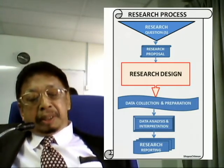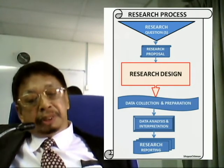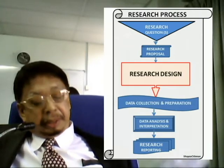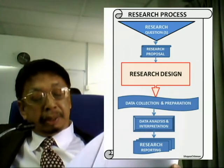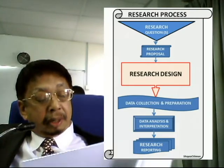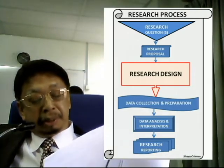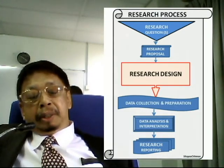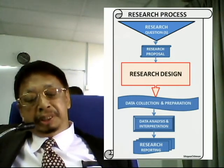Then you have to design your research, and this design of research involves many stages such as methods of data collection. This involves sampling design and design strategies such as types of research, the purpose, the time dimension, scope, and environment. This involves special lectures in detail on how you should come out with your research design.